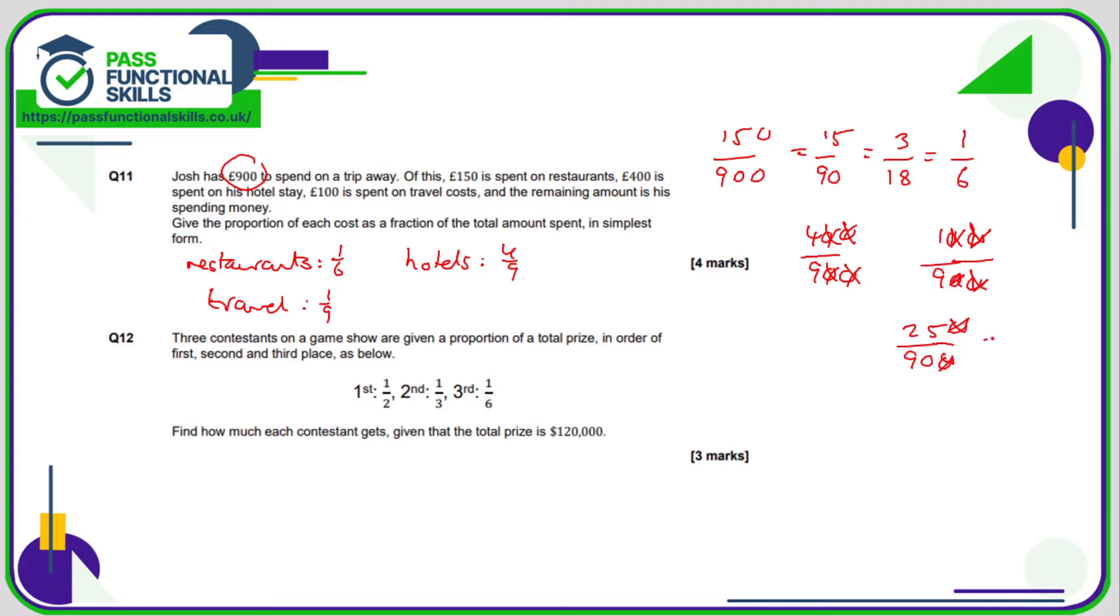We've now got two numbers in the five times table. 25 divided by five is five, and 90 divided by five is 18. Can that be simplified any further? No it can't. So spending money is simply five eighteenths.